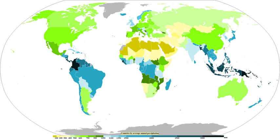The wet season is a time when air quality improves, freshwater quality improves, and vegetation grows significantly. Soil nutrients diminish and erosion increases. Tropical cyclones, a source of very heavy rainfall, consist of large air masses several hundred miles across with low pressure at the center and with winds blowing inward towards the center in either a clockwise or counterclockwise direction. Although cyclones can take an enormous toll in lives and personal property, they may bring much-needed precipitation to otherwise dry regions. Areas in their path can receive a year's worth of rainfall from a tropical cyclone passage.